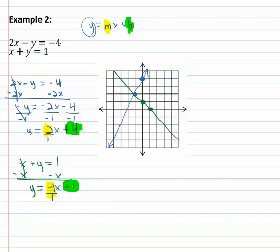The solution is the x and the y where they overlap, backwards one, up two, negative one comma two, is the solution to this system of equations.